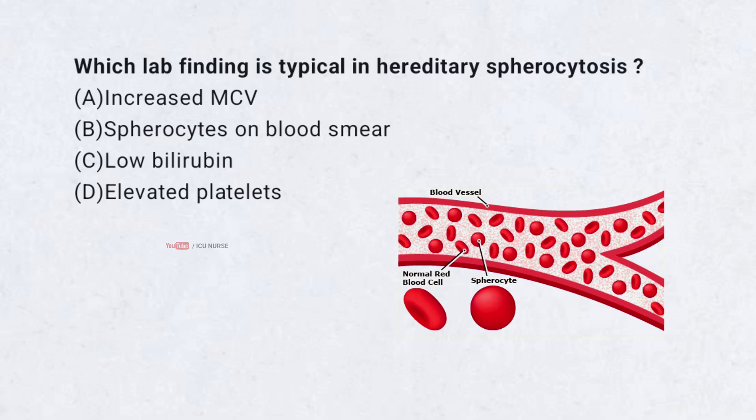Which lab finding is typical in hereditary spherocytosis? A. Increased MCV, B. Spherocytes on blood smear, C. Low bilirubin, D. Elevated platelets. Correct answer: B. Spherocytes on blood smear. Hereditary spherocytosis causes spherical, fragile RBCs due to cytoskeleton defects.